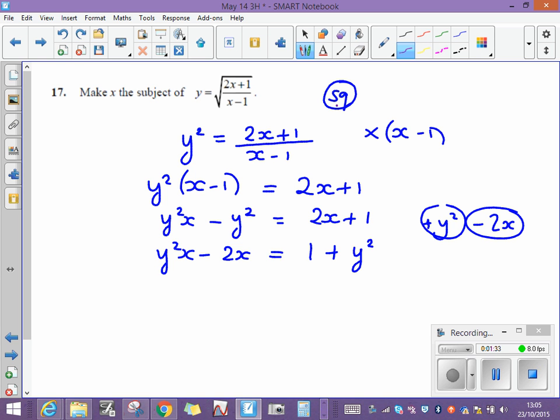I'm now going to factorise the left-hand side. I can see that x is the common factor. So if I take out that common factor, what do we multiply x by to get y squared x? We multiply by y squared. What do we multiply x by to get minus 2x? Well, that's just minus 2. And I've now, on the right-hand side, still got 1 plus y squared.